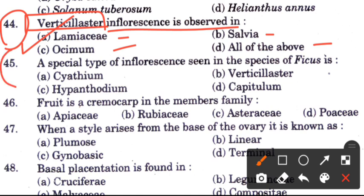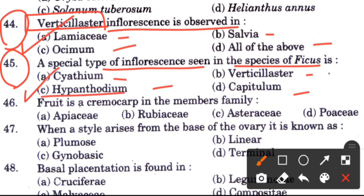Question 45: A special type of inflorescence seen in the species of Ficus — options are cyathium, verticillaster, hypanthodium, and capitulum. The answer is C, hypanthodium.